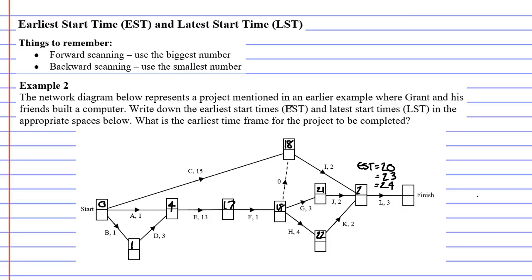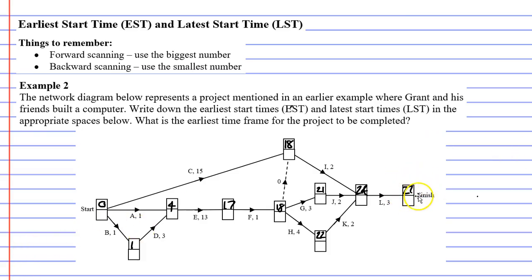We write down the largest number, which is 24. Then finally, activity L — where everything has been installed and we can screw the cover on the case — takes three minutes but has to wait at least 24 minutes. So 24 plus 3 gives us 27 for our finish vertex. The earliest time frame for completing this project is 27 minutes to build this computer.